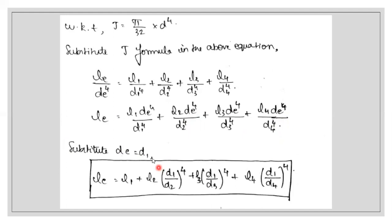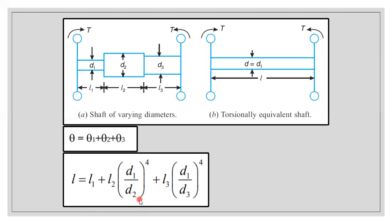Now we replace the equivalent shaft diameter with diameter d1 — we can take any diameter, and in this case we take shaft one's diameter. When we substitute de with d1, the d1⁴ terms cancel, leaving just L1. For the other terms, d1⁴/d2⁴ can be written as (d1/d2) to the power 4, similarly (d1/d3)⁴ and (d1/d4)⁴. This gives us the final formula for the length of the torsionally equivalent shaft, which matches what we showed earlier.